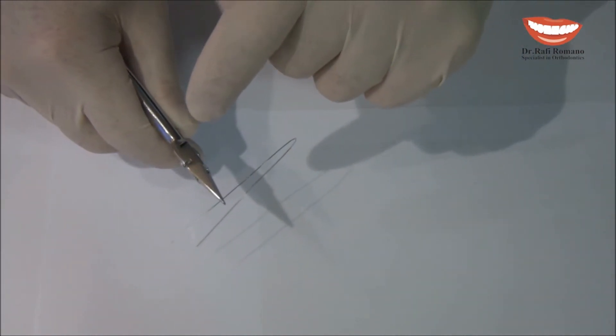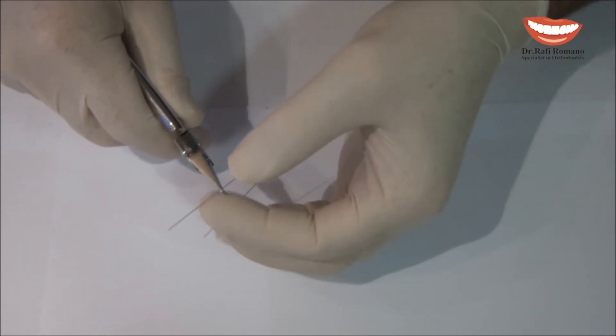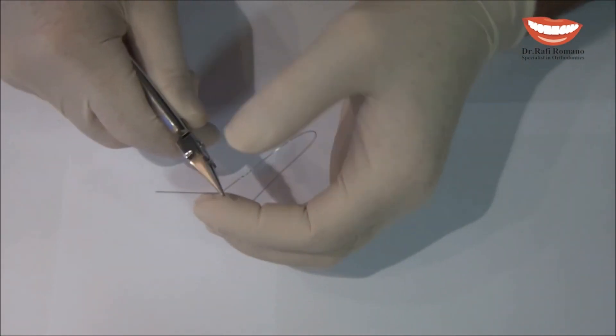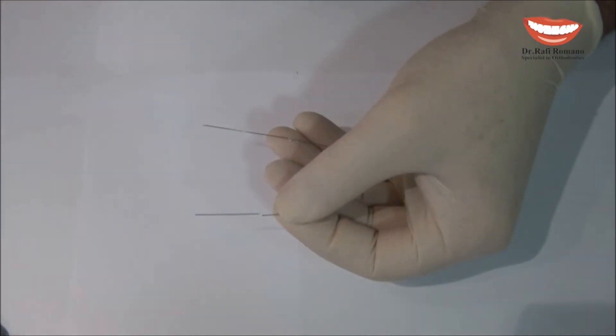If we want to have an in-bend, we take this part out and this part in. And you can see already the in-bend.